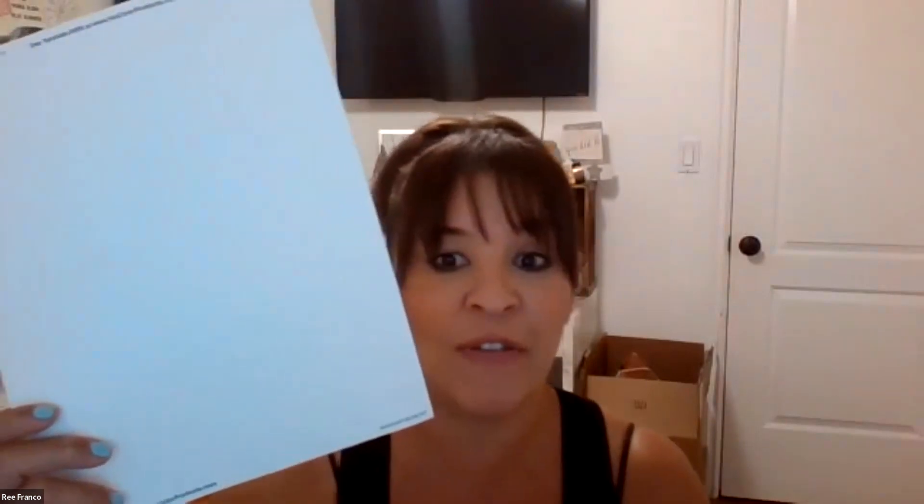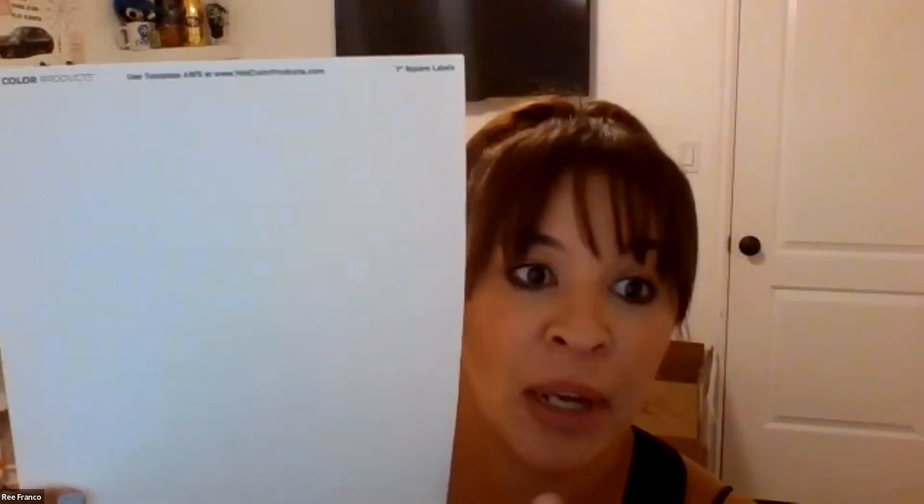These are a different template — they're through hotcolorproducts.com. You can buy them through Amazon, they're like five bucks and they give you a ton of them. I've been using them for like two years. If you're interested in this template for just a QR code you can slap on stuff, you can get it through hotcolorproducts.com — they're one inch square labels.